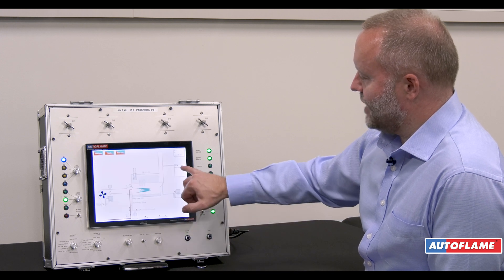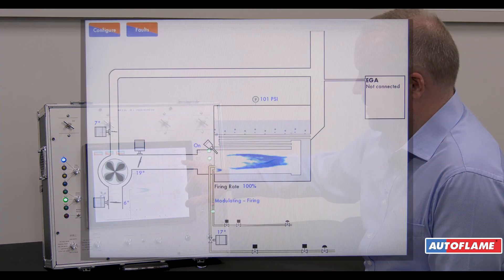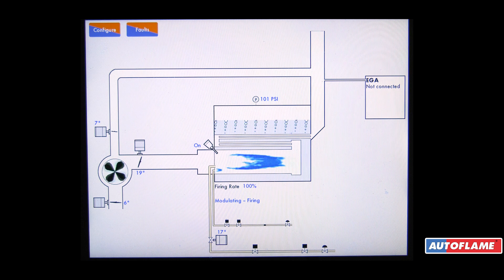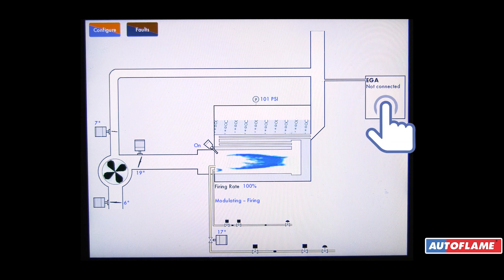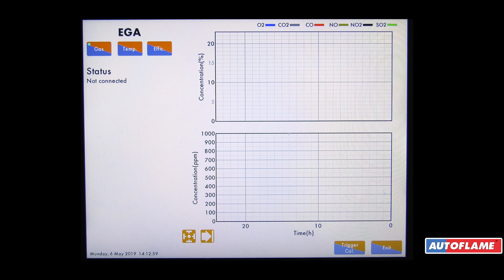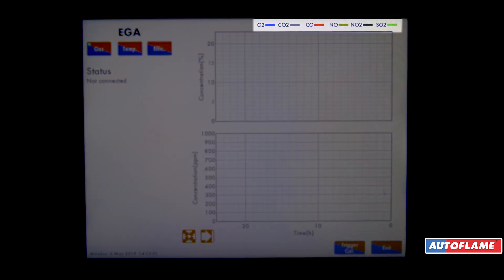Now if we have an exhaust gas analyzer, the Autoflame exhaust gas analyzer connected to the system, we get this additional box. By pressing on this box it will show us the oxygen, CO2, CO, NO, NO2, and also the SO2 if we're burning heavy oil.